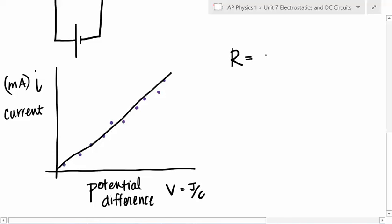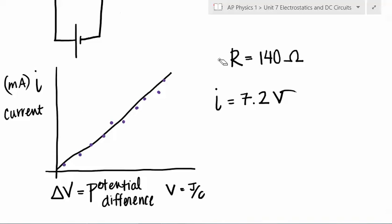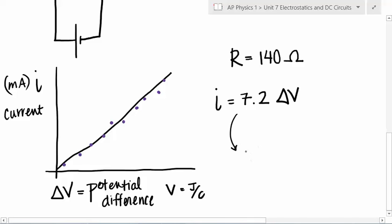I asked you to set the resistance and then change the voltage — the potential difference of the battery — and measure the current. Let's say I set my resistance at 140 ohms. When I got my best fit line, I got an equation that looked like I equals 7.2 times delta V — where delta V is the potential difference.